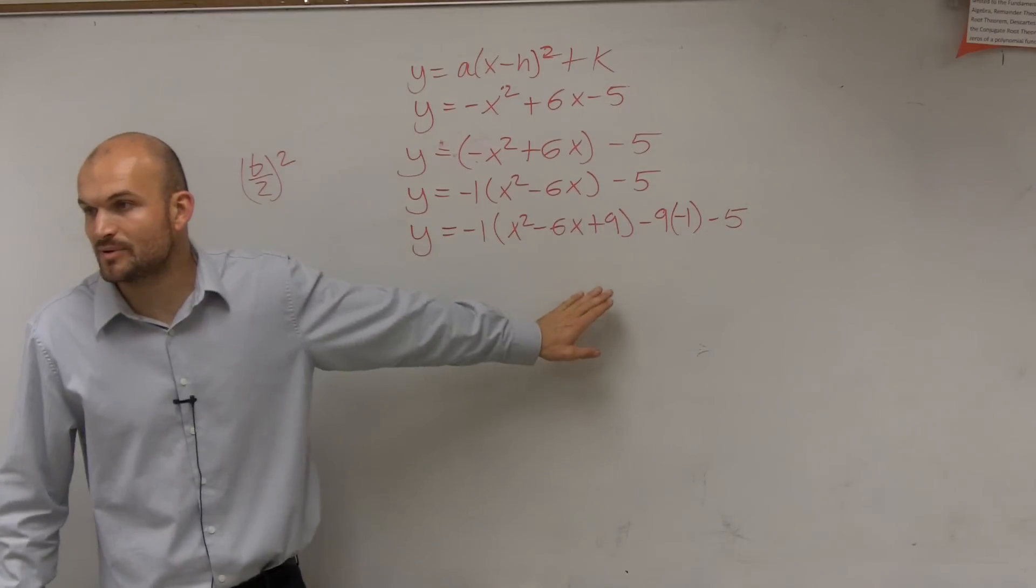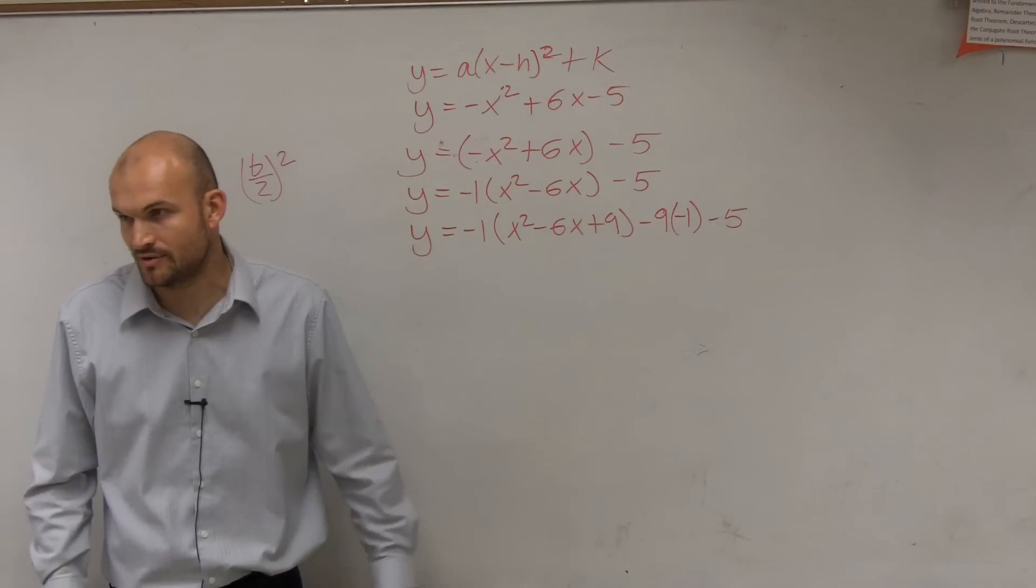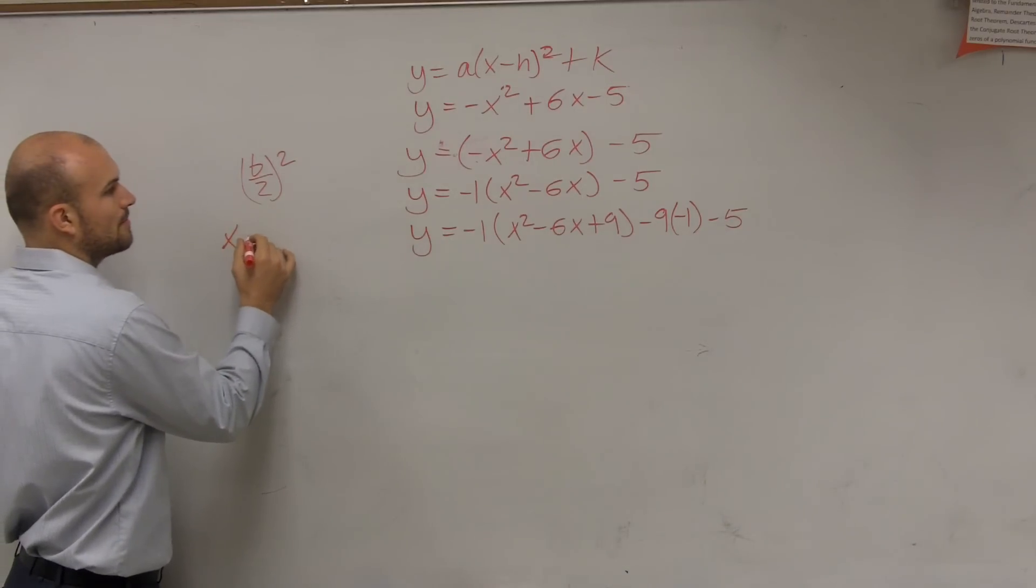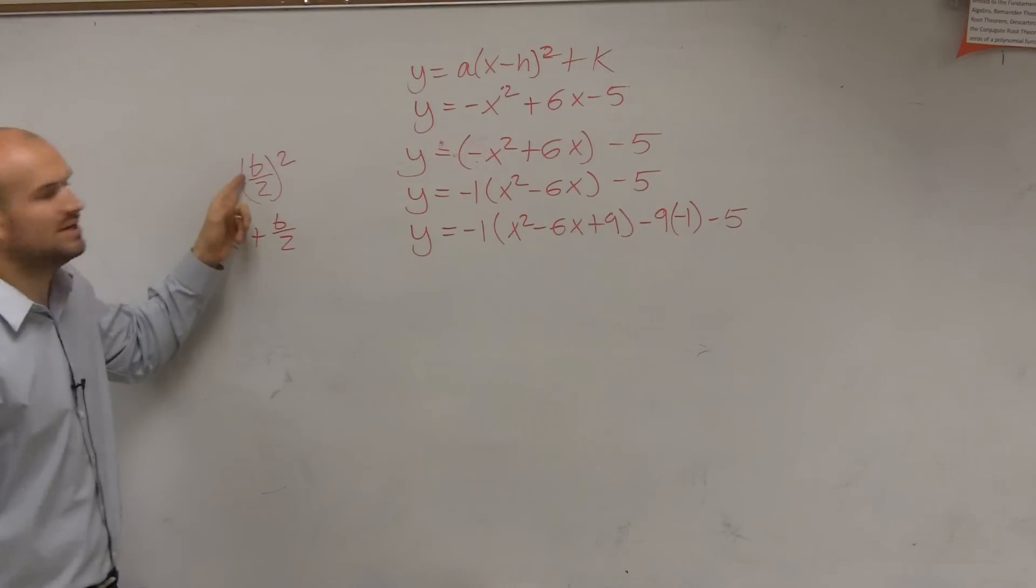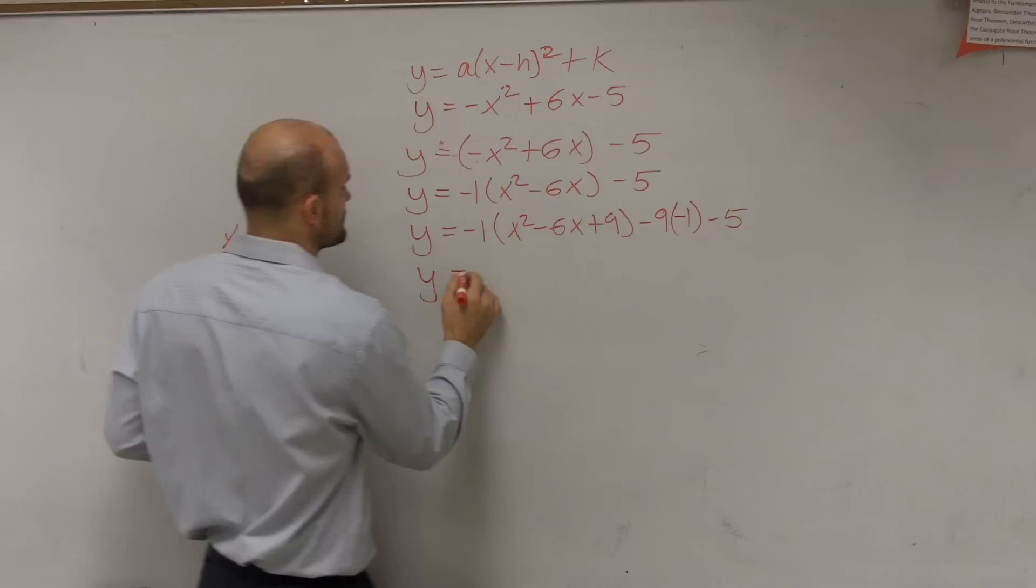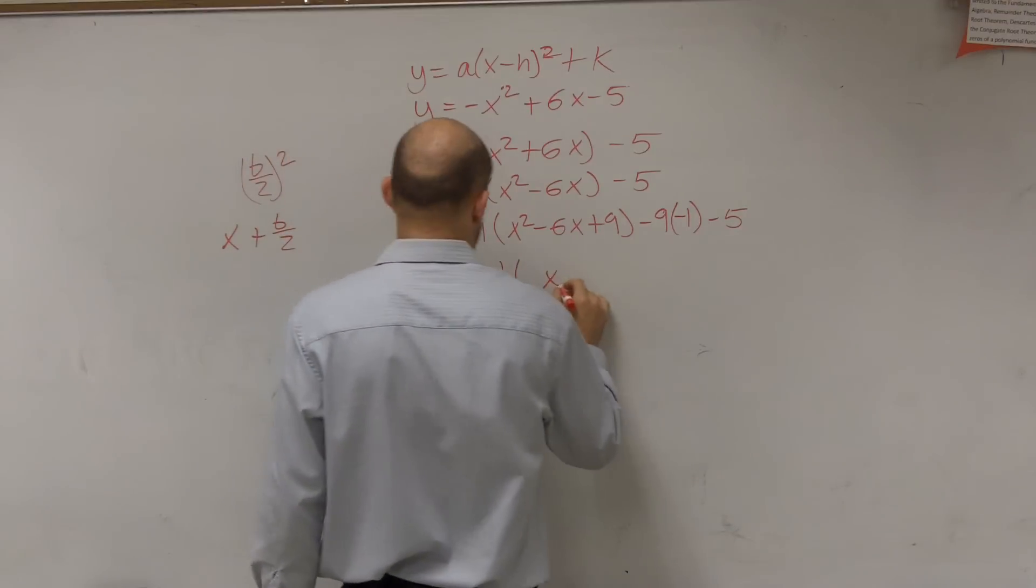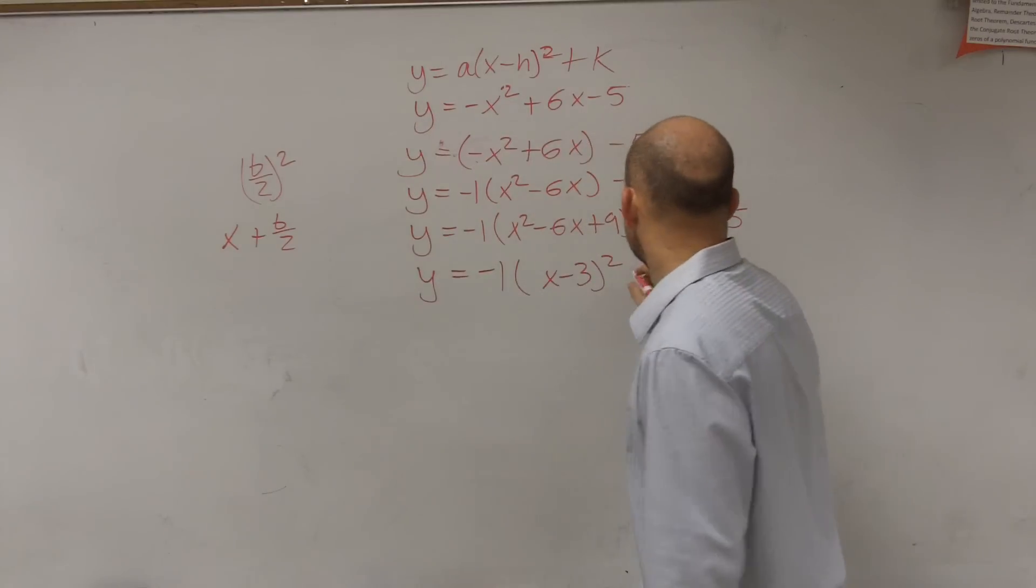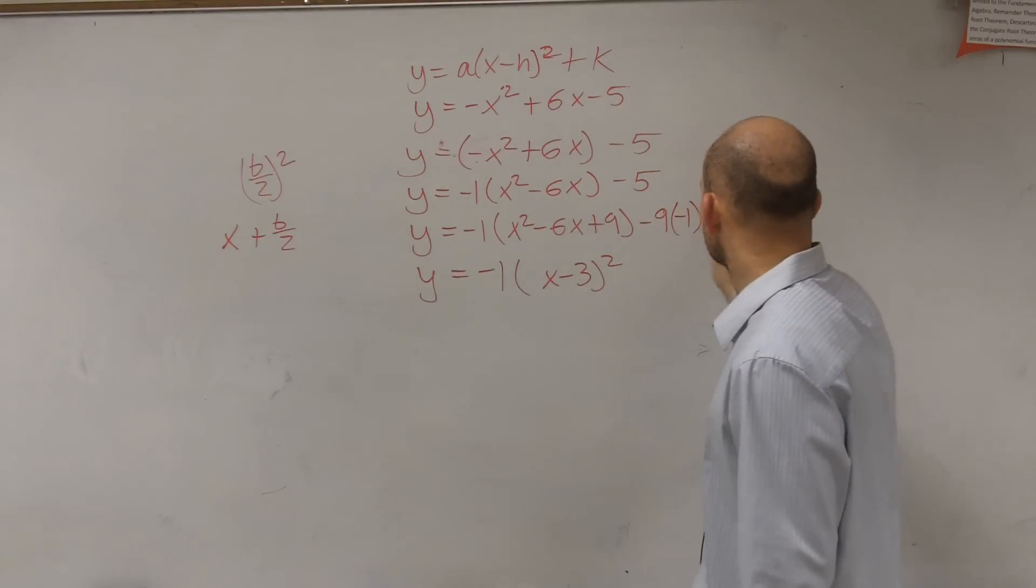So now let's rewrite this as a perfect square. Demetri, you asked me how I got that one, right? And I said the shortcut. You can always just do x plus b divided by 2. So b is negative 6 divided by 2, which is a negative 3, right? So you can just write this as y equals negative 1 times x minus 3 squared plus 9 minus 4 equals positive 4.